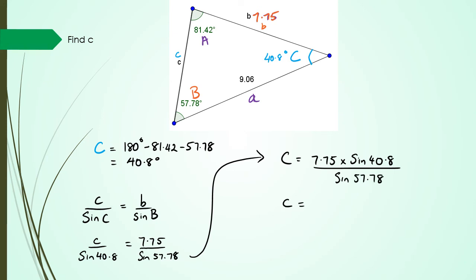So when I do this in the calculator I get 5.99. And that's what little C is.